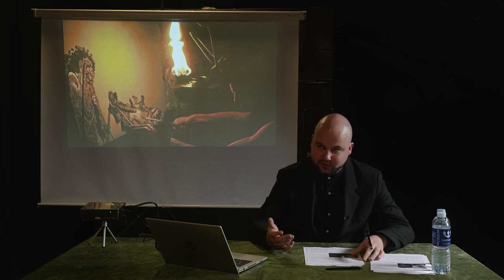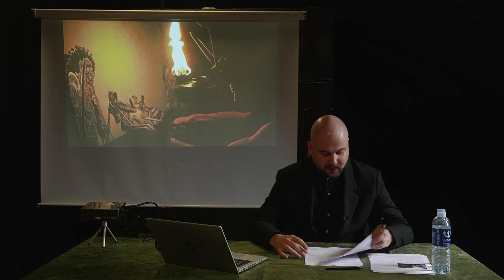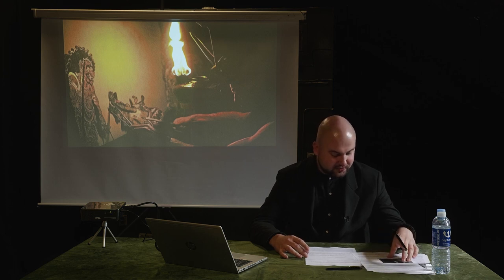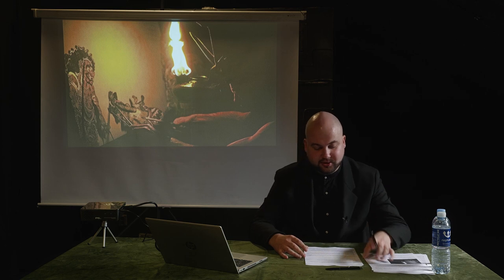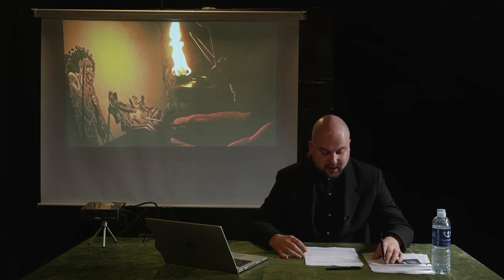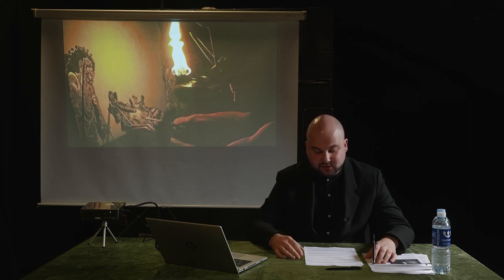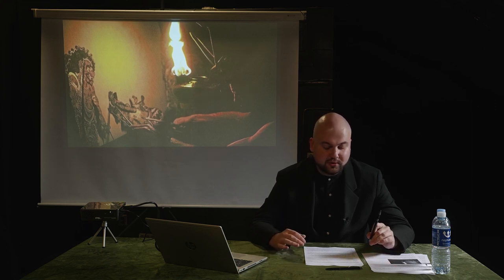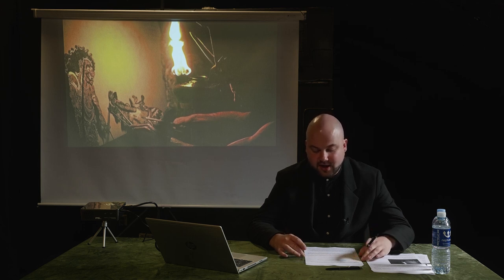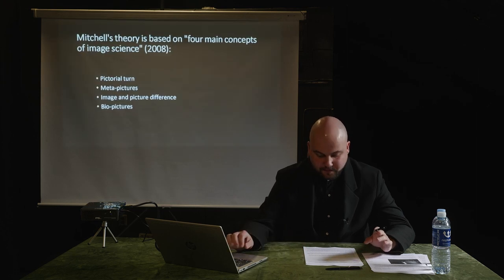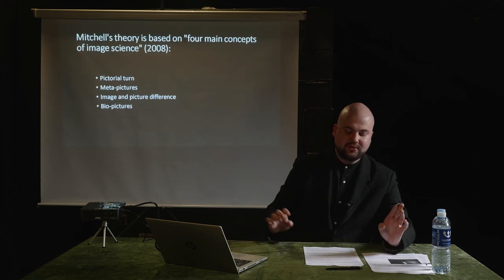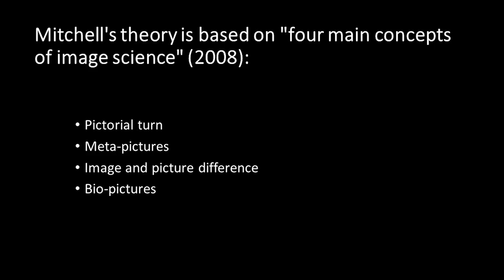Mitchell's project of critical iconology, most notably inspired by Sigmund Freud and Karl Marx, proposes to consider images as living and independent. Mitchell's theory is based on four main concepts of image science: the pictorial turn, meta-pictures, the image-and-picture difference, image science, and bio-pictures. In here we are starting to get closer to theatre territory.